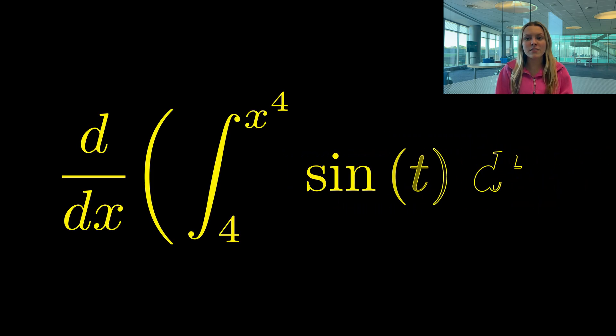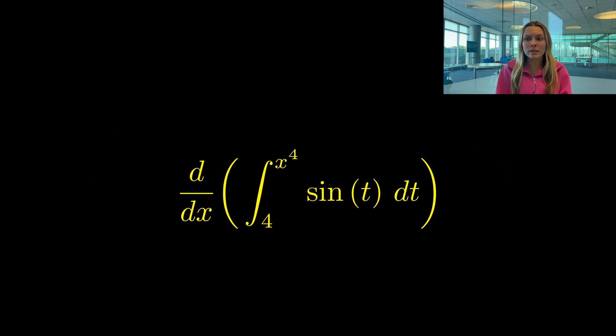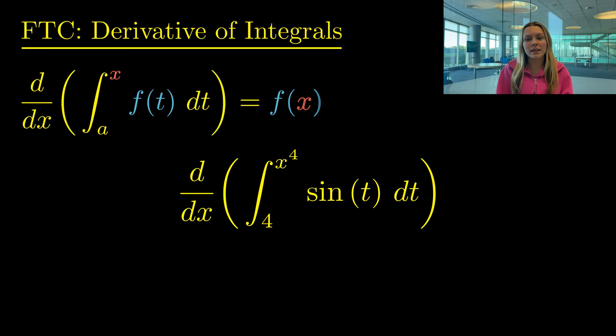Let's try a slightly harder example that will require the chain rule. To use FTC to take the derivative of the integral of sin(t) from 4 to x⁴, we are going to plug in x⁴ into sin(t). So our derivative starts with sine, but instead of t, it will be sin(x⁴).